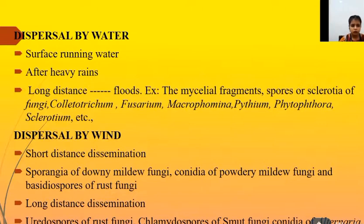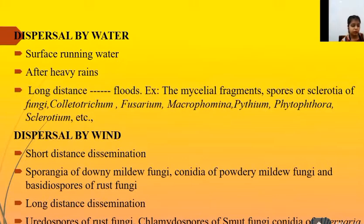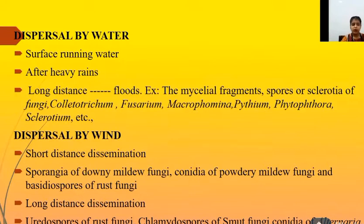Dispersal by water involves surface running water, which causes dissemination of different plant pathogens after heavy rains. Long-distance dispersal can also occur through floods. Examples of pathogens dispersed by water include Fusarium, Macrophomina, Phytophthora, and Sclerotium. Dispersal by wind involves both short-distance and long-distance dissemination.